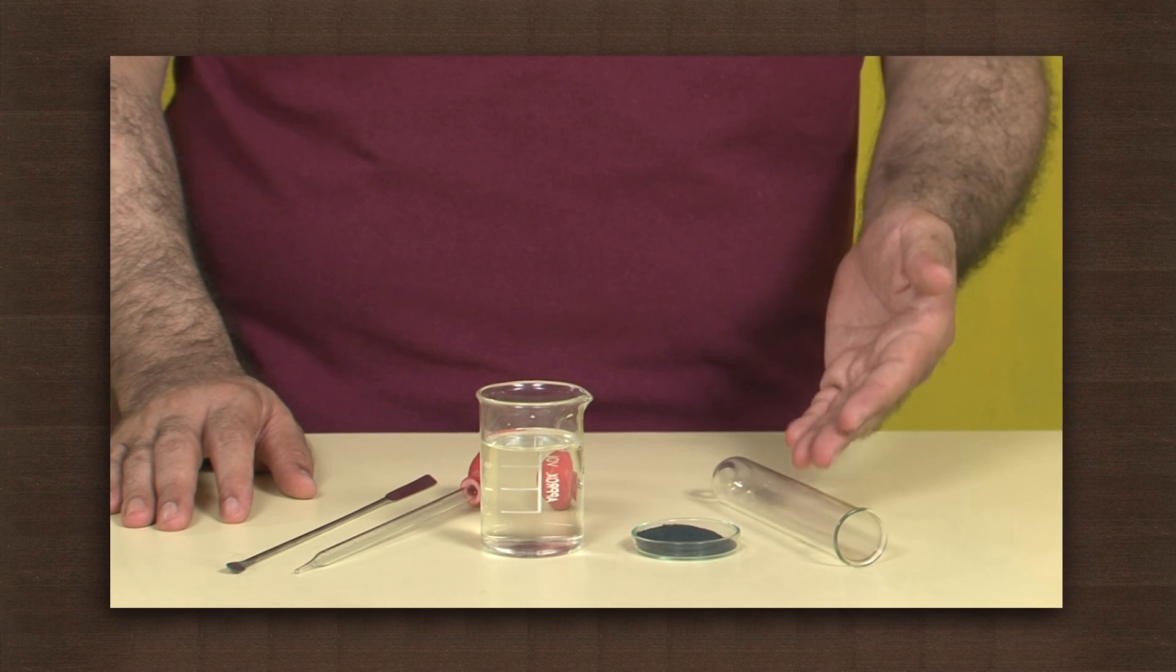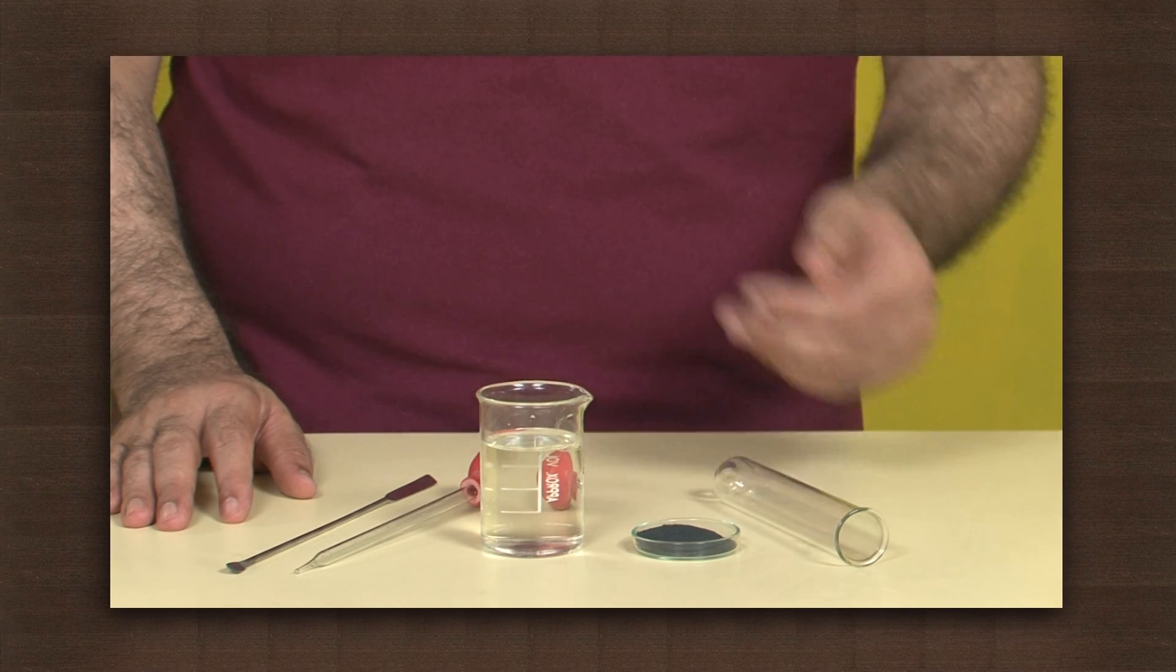We will see what happens when metal oxides react with an acid. We need a test tube, copper oxide, and dilute hydrochloric acid.